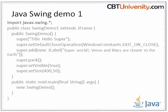Next, a JLabel is created with a string and add component. The add component method inherited from the container superclass is called to add the label to the frame. The pack method inherited from the window superclass is called to size the window and layout its contents.